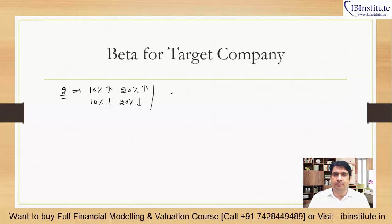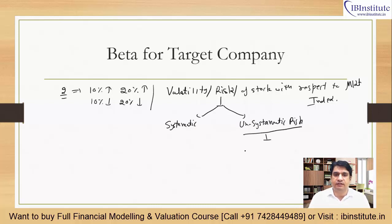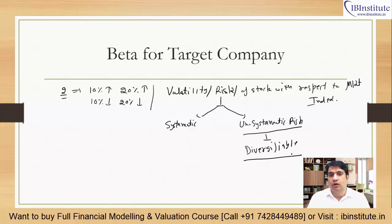So what is beta? Beta is the volatility or risk of a stock with respect to the market index. Now what is risk? This is diversifiable risk — the risk which you can diversify by investing in other companies. That risk is called diversifiable risk, or unsystematic risk.